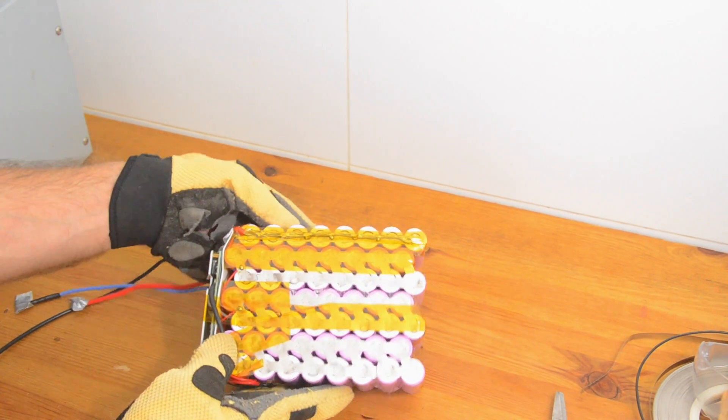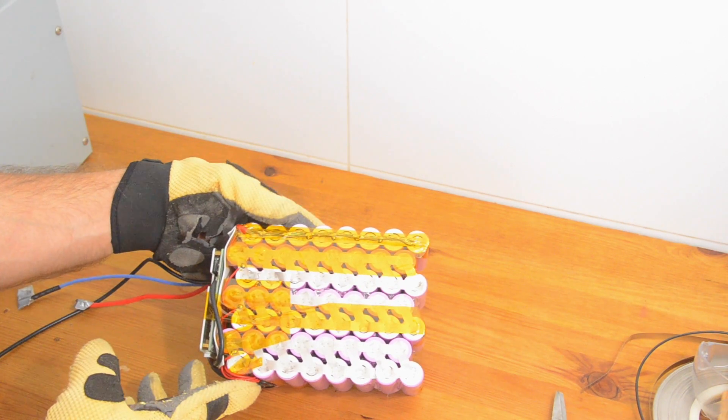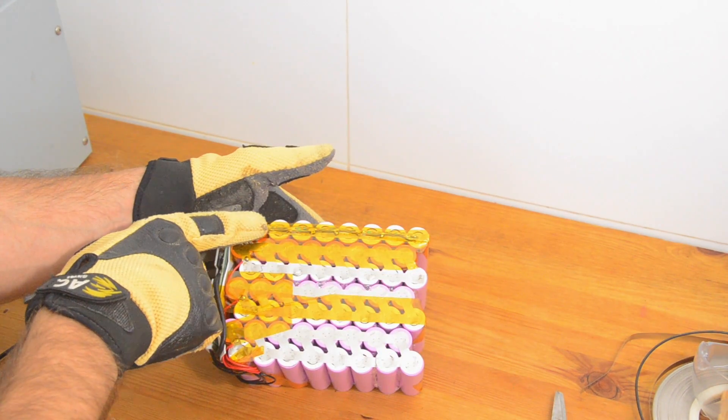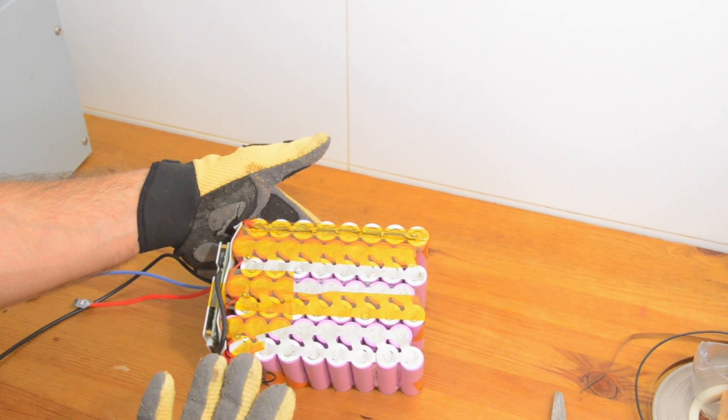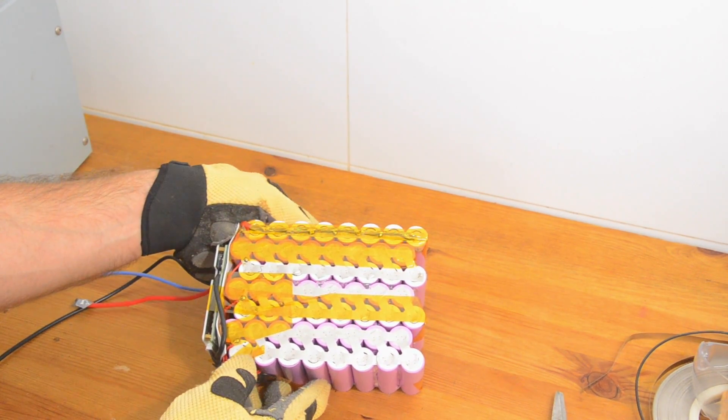And what we're going to need to do is come back and add three more cell groups here. So if this is cell group seven here, we're going to have to come back and add three more groups, eight, nine, and ten. And that's going to bump us up to a 36 volt battery. So now let's get our cells ready.